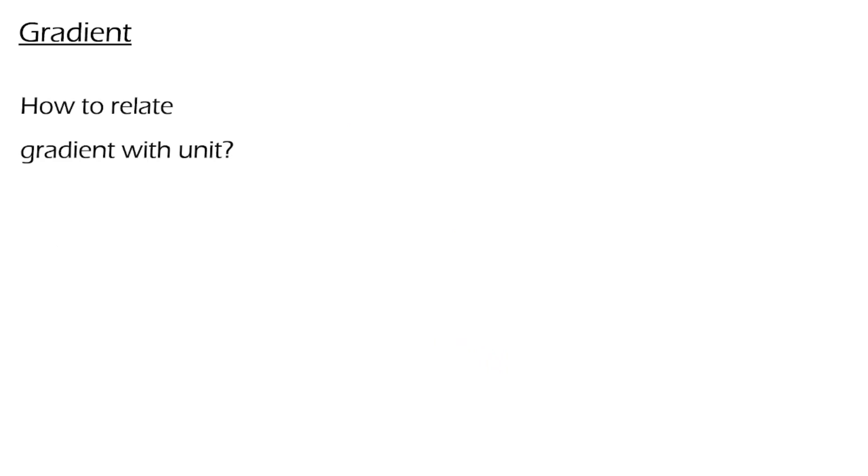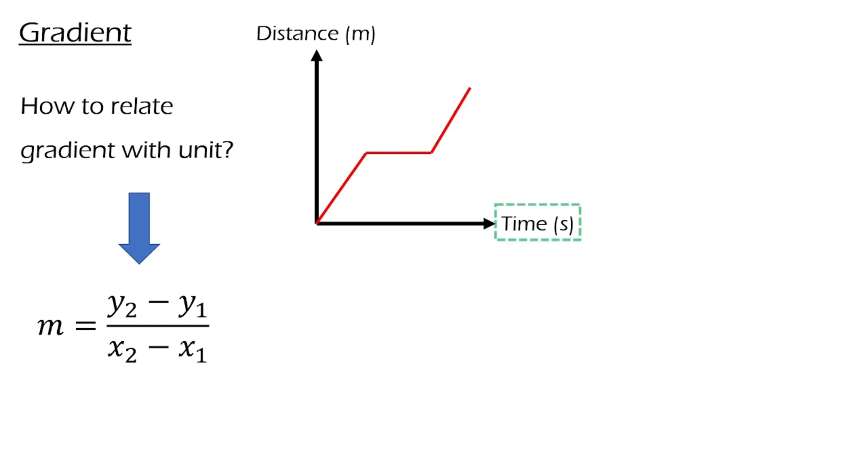How to relate gradient with units? It all have to do with the gradient formula. Let's take this graph as an example. It has time for the x-axis and distance for the y-axis. When we try to find the gradient of the line, you can notice that y2 minus y1 is finding the difference in the distance. Whereas x2 minus x1 is finding the difference in time.